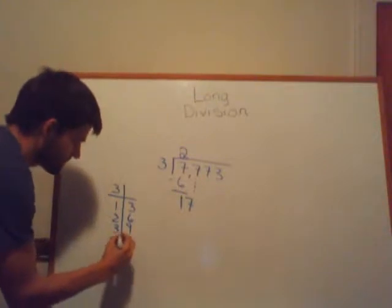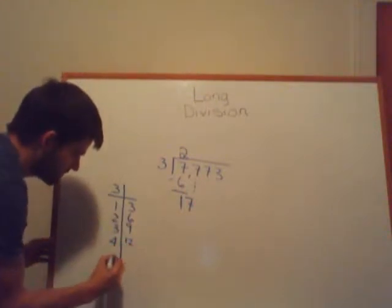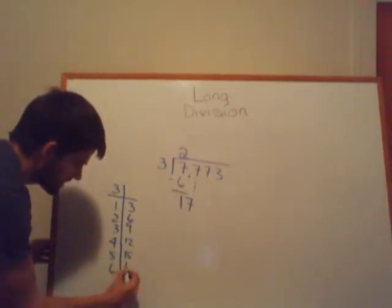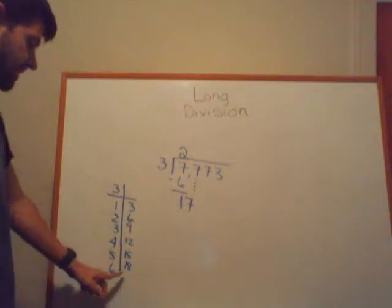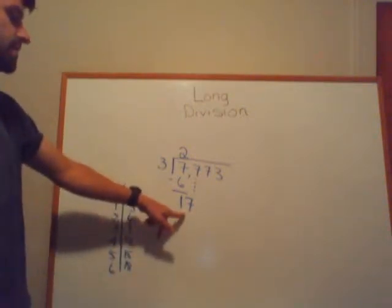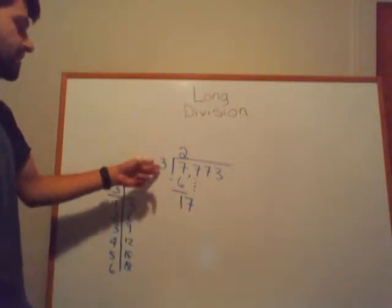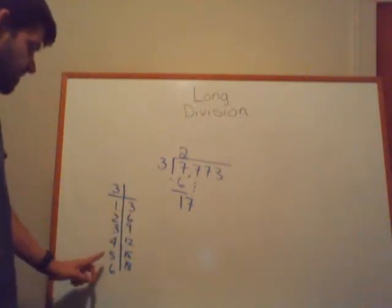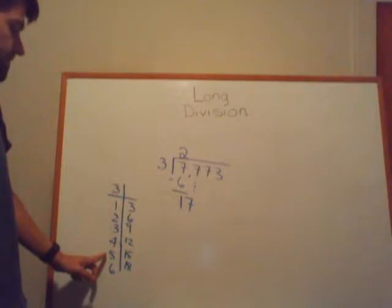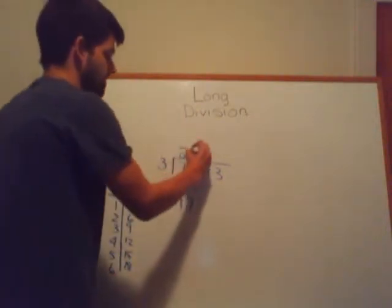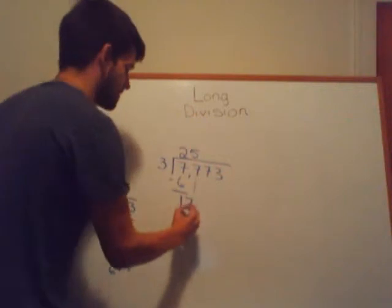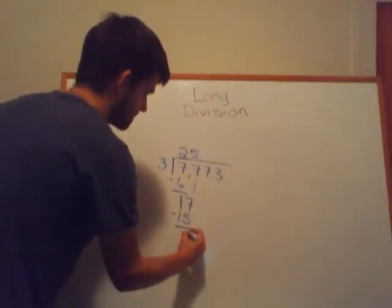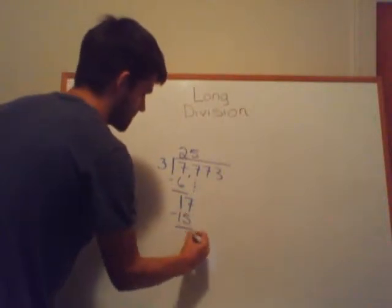Continuing the table: 4×3=12, 5×3=15, 3×6=18. I can stop here because 18 is greater than 17, meaning 3 can't go into 17 six times. But 3 can go into 17 five times because 3×5=15, and that's not going over 17. So 3×5=15. Subtract: 17 minus 15 is 2. Bring down the 7.